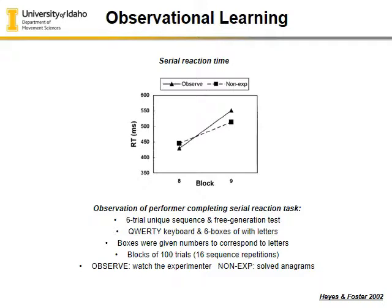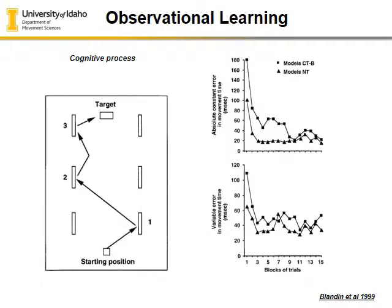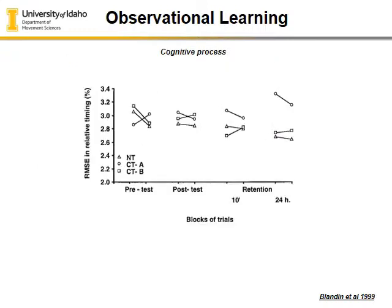Another process is the serial task, where participants had six trials of unique sequences on a keyboard with six boxes. The observer was able to watch the experimenter, while the non-observer had to solve something else during the process to keep their mind occupied. In this cognitive task, participants were trying to follow the sequence and hit the necessary blocks. The learned behavior was much better for those in the observational learning condition.